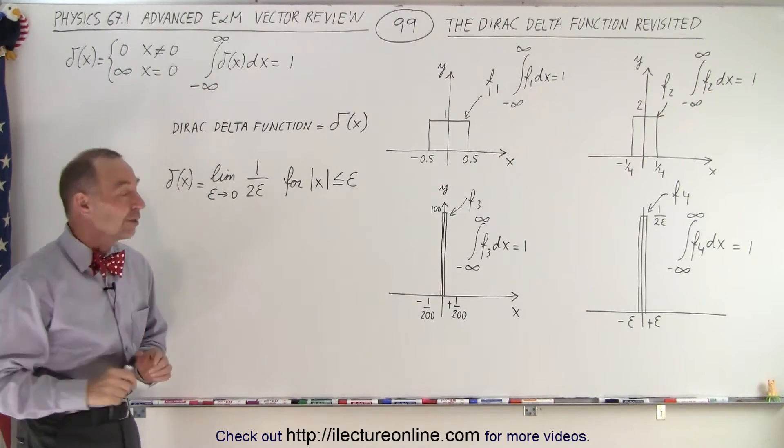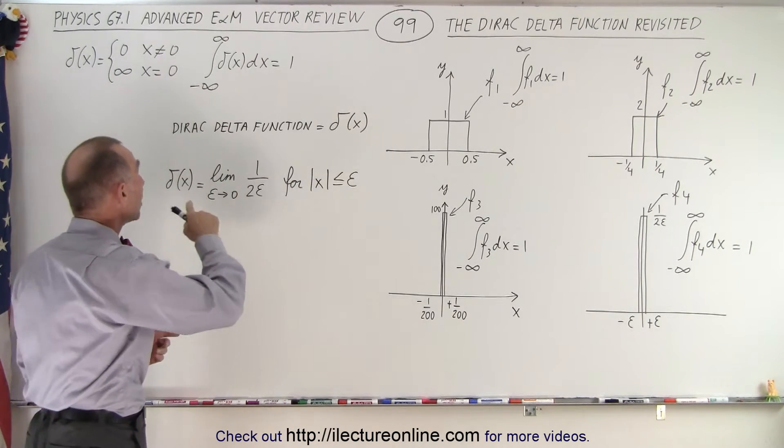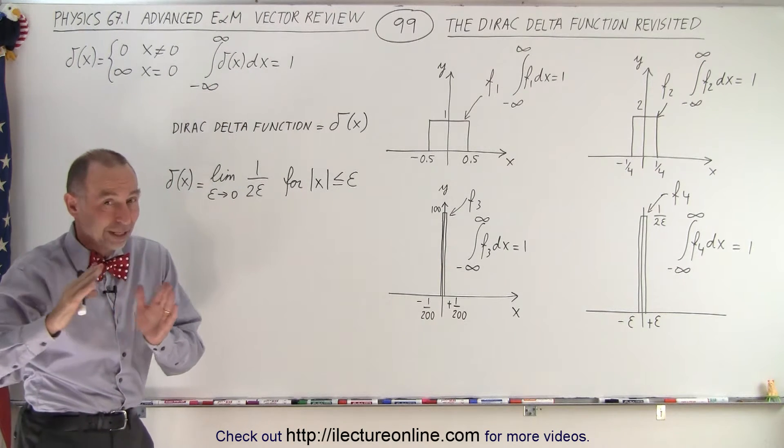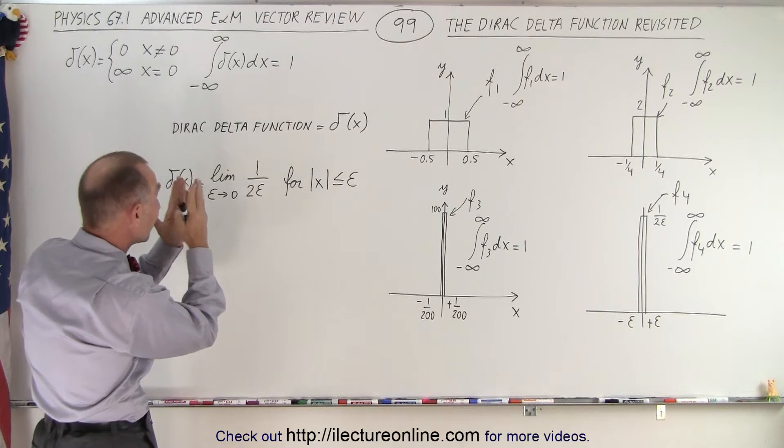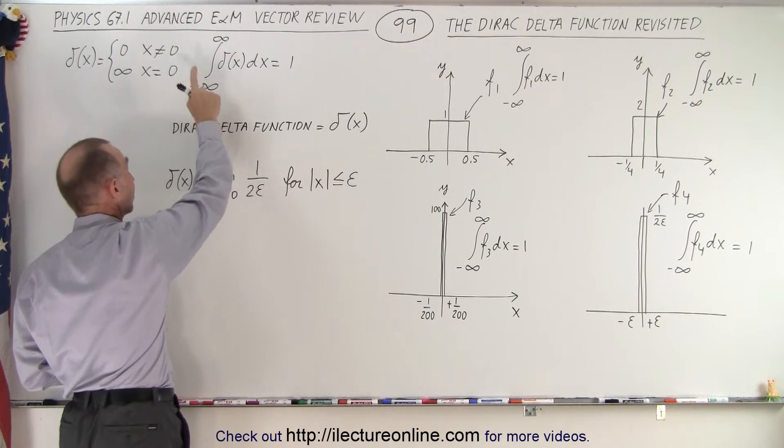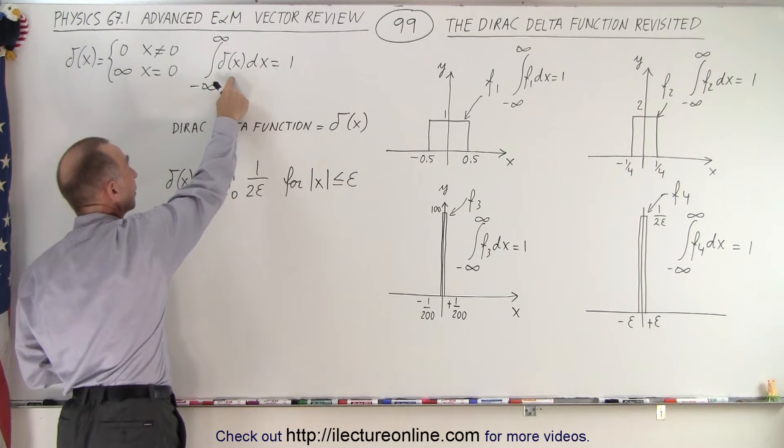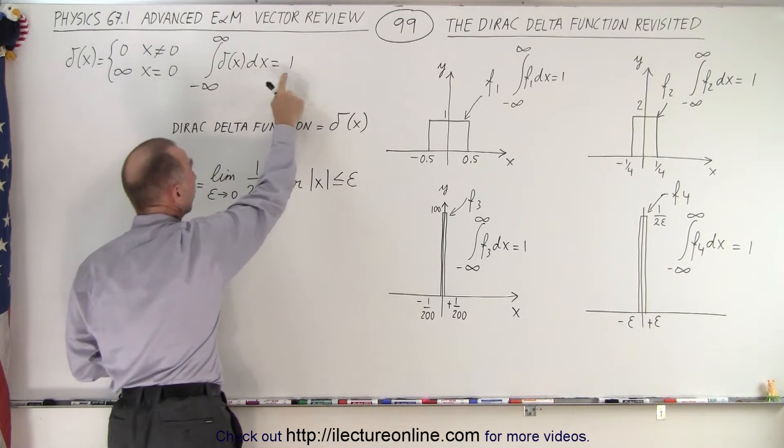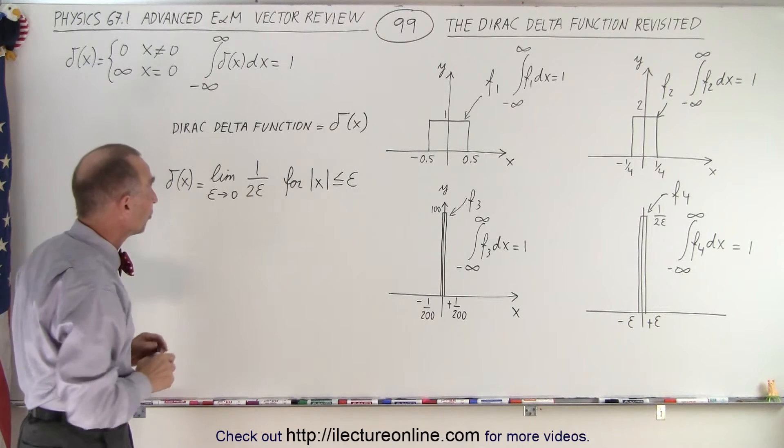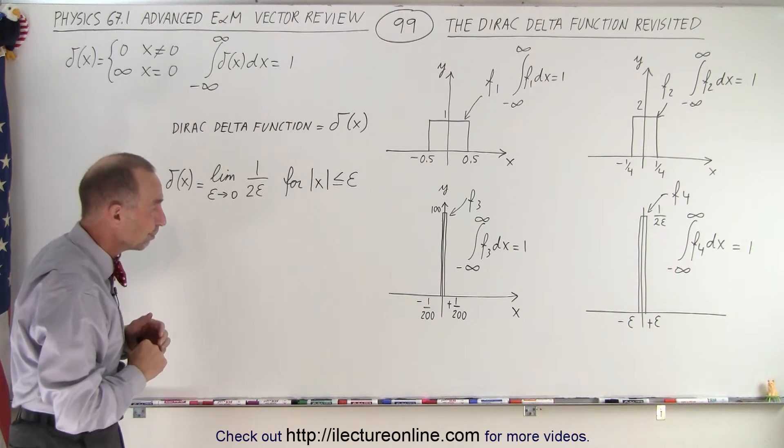A better way to define it is when we integrate over the function from negative infinity to infinity, although we don't have to go out quite that far on the limits because it's only infinite when we get to zero, so we can actually go from negative 0.1 to positive 0.1 over the Dirac delta function. When we integrate, we get one, and that's a much more important concept or definition for the Dirac delta function.